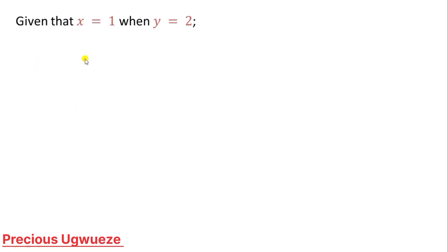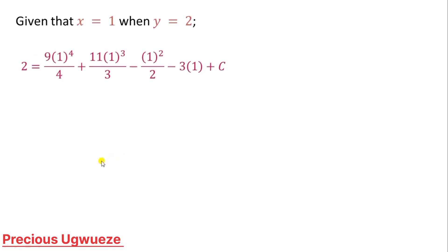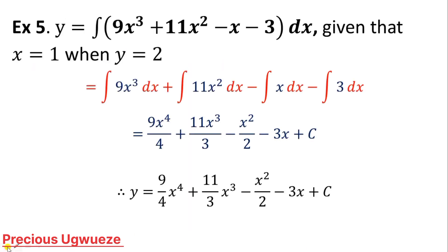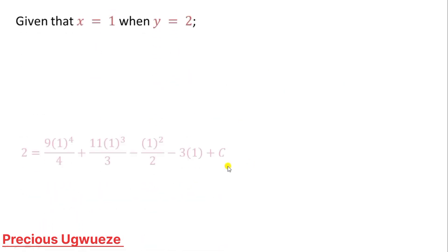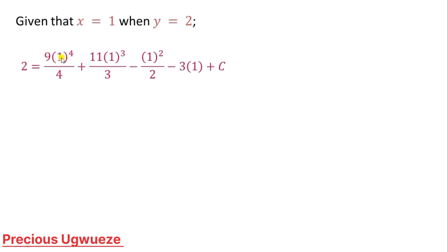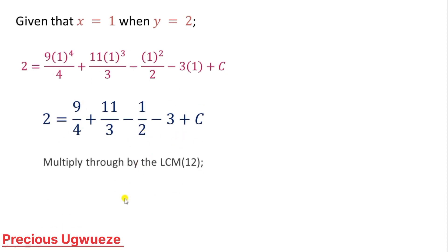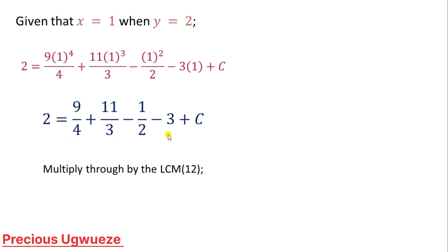Since x equals 1 when y equals 2, we substitute y as 2 and x as 1 everywhere. With x equal to 1, each power of x is just 1 — 1 to the power 4 is 1 times 9 is 9, and similarly for other terms. We then multiply through by the LCM of 12 to clear the fractions. 12 times 2 is 24, the 4 cancels to leave 3 times 9 giving 27, the denominator 3 leaves 4 times 11 giving 44, and 6 times 1 gives 6.